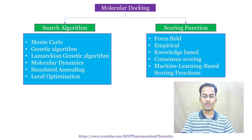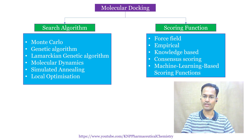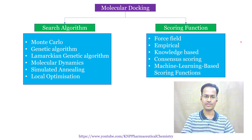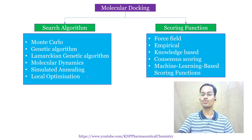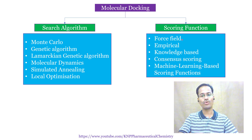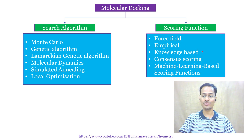Molecular docking has two important functions: search algorithm and scoring function. Examples of search algorithms are Monte Carlo, genetic algorithm, Lamarckian genetic algorithm, molecular dynamics, simulated annealing, and local optimization. According to the scoring function, force field, empirical, and knowledge-based scoring functions are the three most commonly used types.